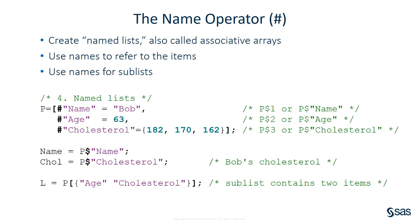Feature number four. You can use the pound sign or hashtag operator to name items in a list. A named list is sometimes called a map or an associative array. For the example of a list that contains patient data, it might be difficult to remember that the first item is the patient's name, the second is his age, and the third is his cholesterol. You can use the name operator to name the items. For example, the syntax pound sign name equals Bob assigns the string Bob to an item whose name is name. When you define a named list, you can use the name instead of an index to refer to items in the list. For example, P dollar sign cholesterol refers to the third item in the list P. You can also use names in the sub-list operator.